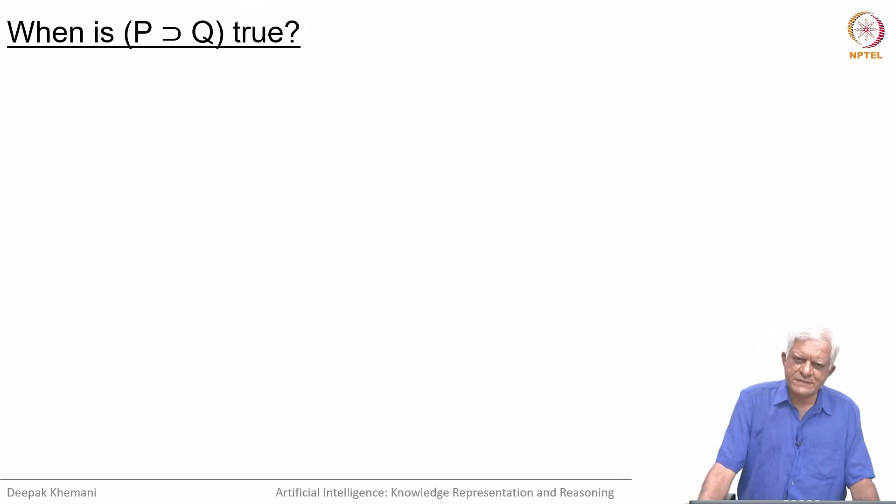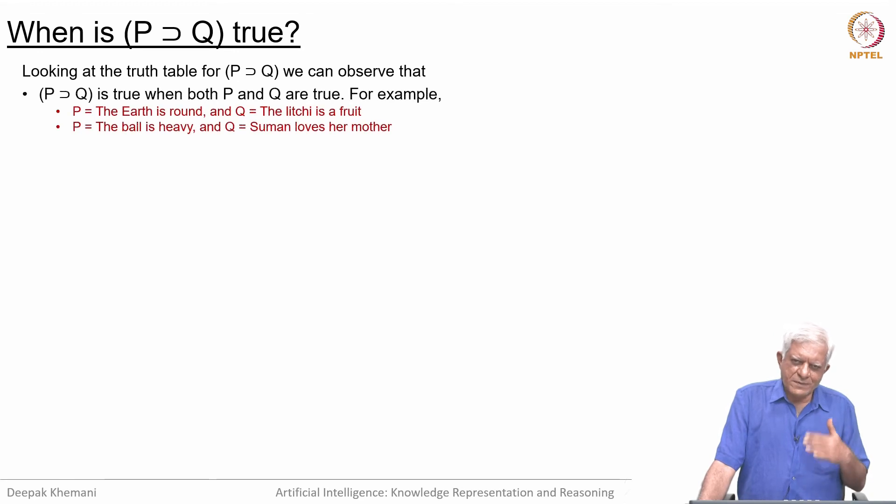When is the statement P implies Q true? We can look at the truth table. It has got four rows in it and we will consider each of those four rows. P implies Q is true when both P and Q are true. That is one row in that. For example, P could be the earth is round, Q could be the lychee is a fruit. Both are true. P could be the ball is heavy and Q could be someone loves her mother. Again, both are true.